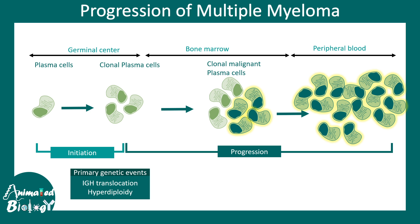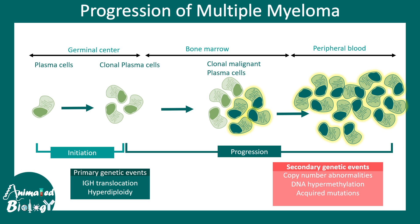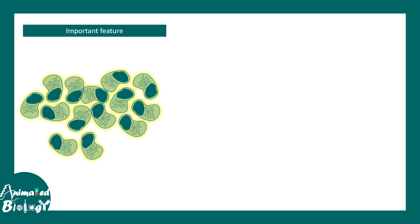Primary genetic events include IgH translocation and hyperploidy. Secondary genetic events include copy number variations, DNA hypermethylation, and acquired mutations — these are all secondary genetic events associated with multiple myeloma, though not necessarily causal. This is the genetic portfolio of multiple myeloma development.